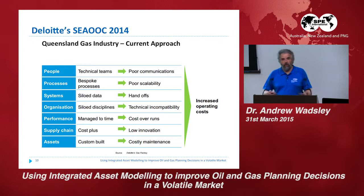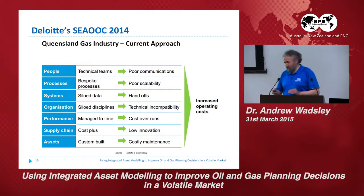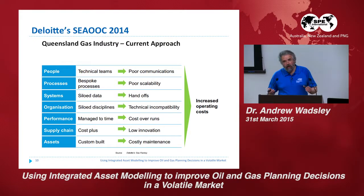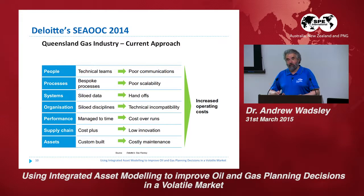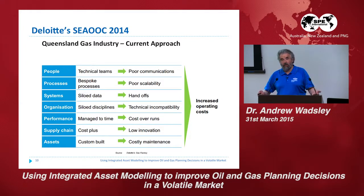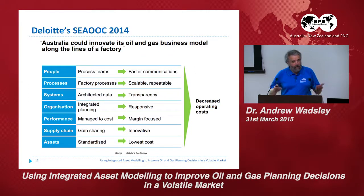With the change in oil price dropping to less than half of what it was, the gas industry in particular — because gas prices tend to be linked to oil — was high margin and now the margins are a lot lower. While we could say 'that's Queensland, we're Western Australia, we're different,' the world has changed. We're in a low margin business at the moment. Deloitte's view is that Australia could innovate its oil and gas business model along the lines of a factory — faster communications, factory processes, everything scalable, transparency, integrated planning that is responsive and adapts to changing conditions, resulting in decreased operating costs.